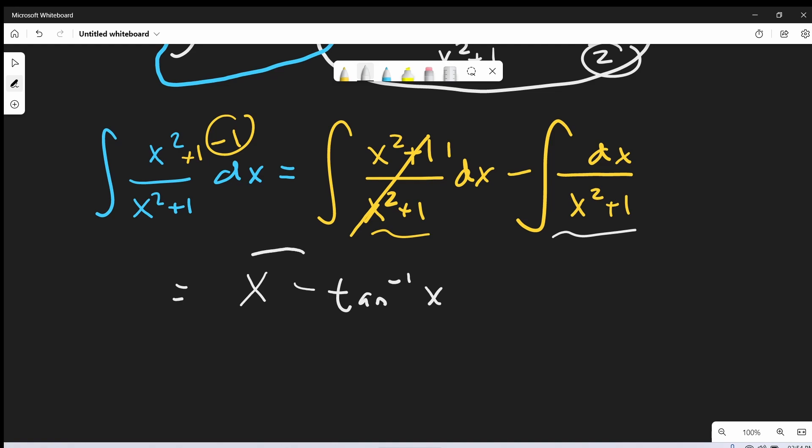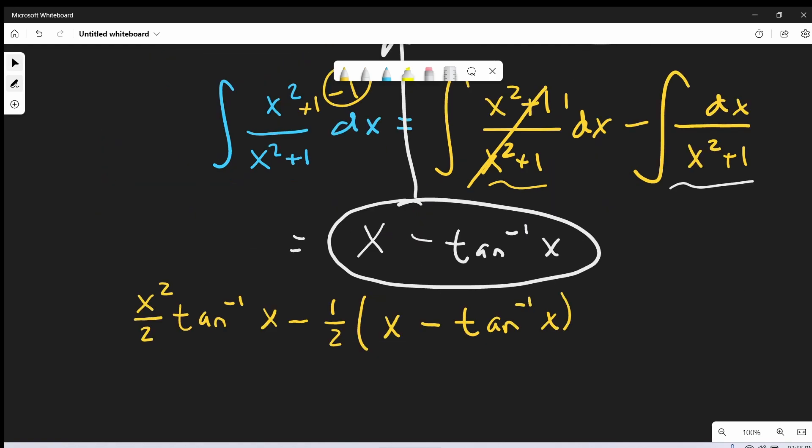Then what we need to do is just put this together, we get this piece, and we just need to bring that back and put it where we had it. So now putting this all together, we have x squared over 2 arctan x minus 1 half. And then we have what we just found here, x minus arctan x plus c.